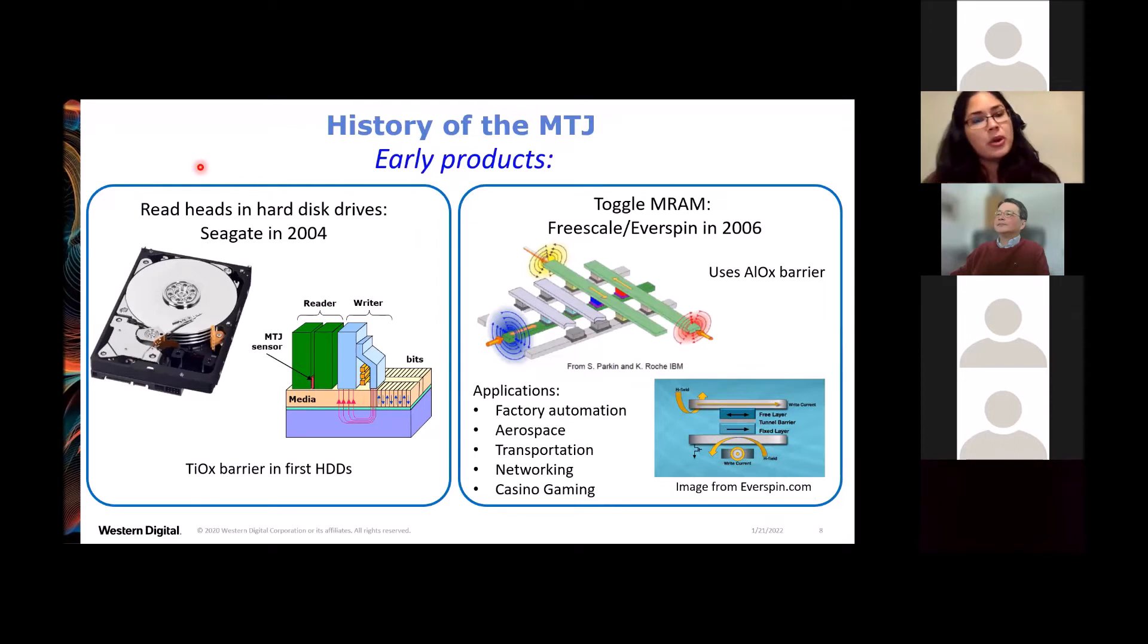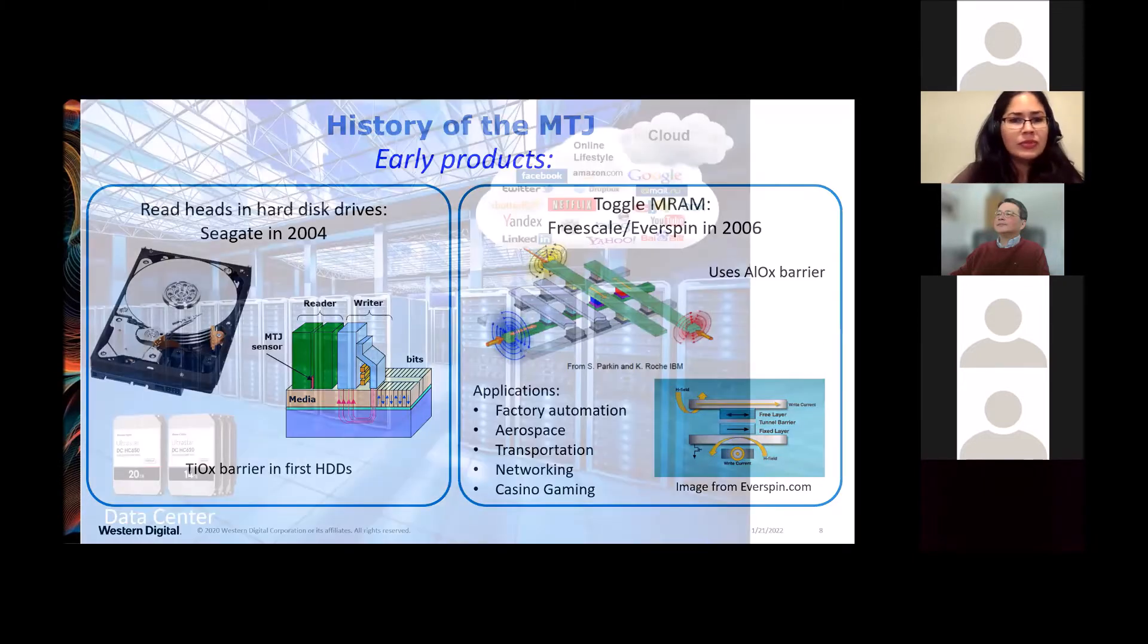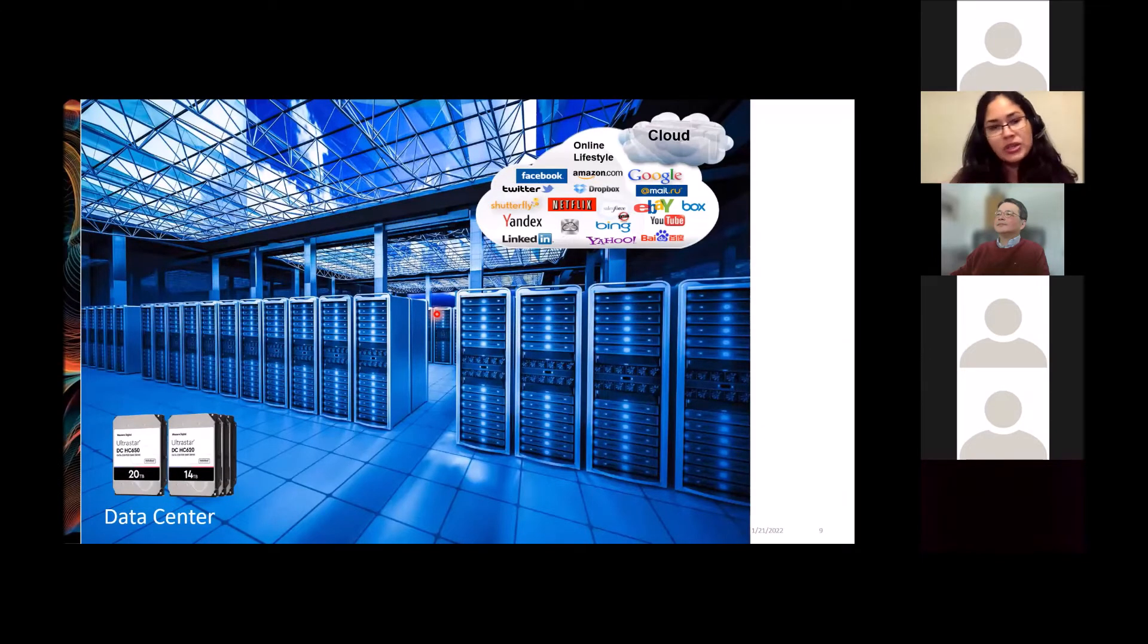So the earliest products for MTJ were introduced in 2004 by Seagate as the read head in hard disk drives. And since then, there are magnetic tunnel junctions in every hard drive produced, even today. The very first ones used titanium oxide tunnel barriers. And then also another major application, Toggle MRAM, first introduced by Freescale, now Everspin in 2006, that uses aluminum oxide tunnel barriers.